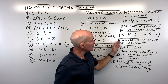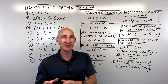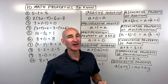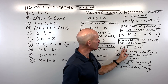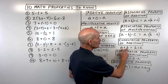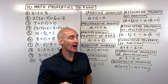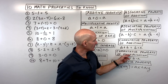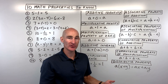For the commutative property of addition, think of commuting to work — you're moving to a different location. Similarly, the commutative property means we're changing the order. A plus b is the same as b plus a; two plus three is the same as three plus two. The same applies to multiplication: the commutative property of multiplication means changing the order gives the same result, like five times two equals two times five.